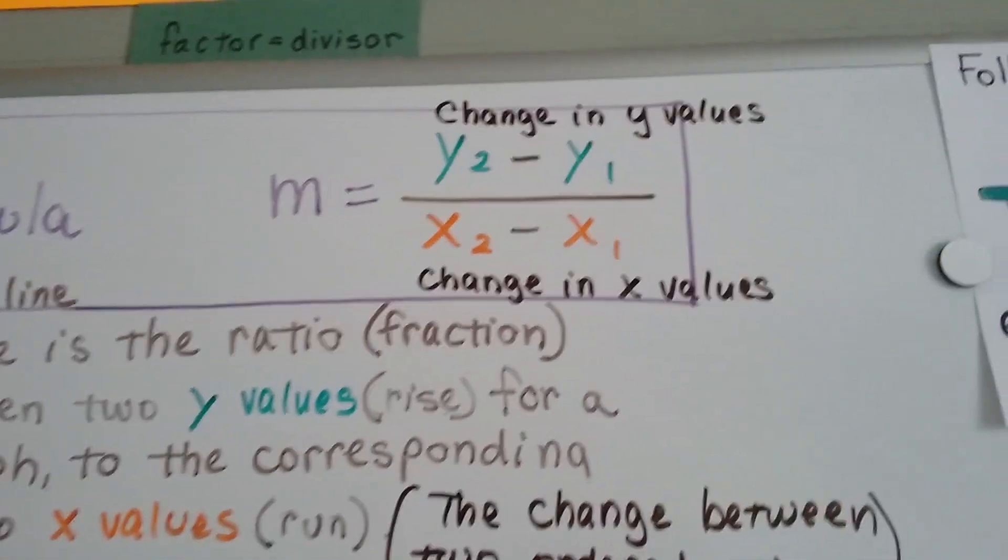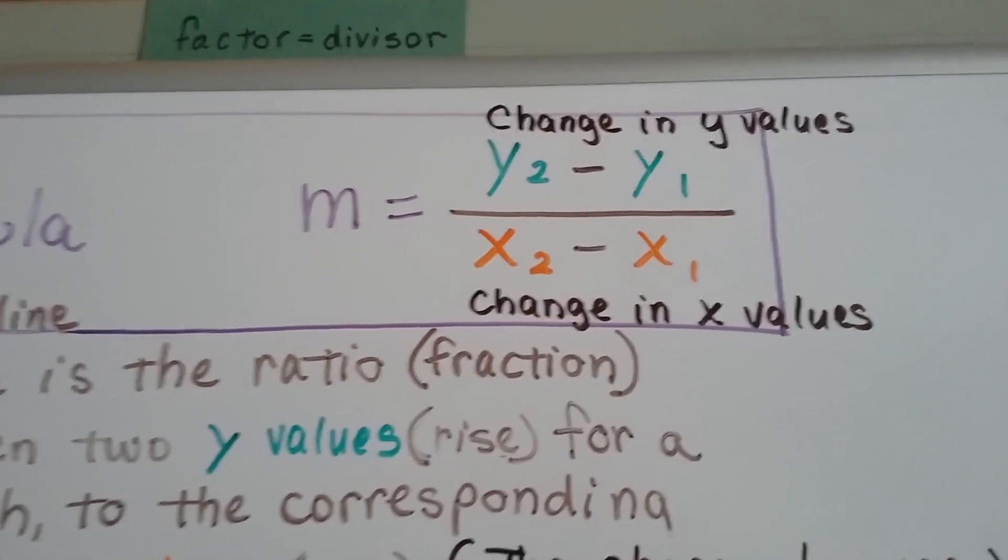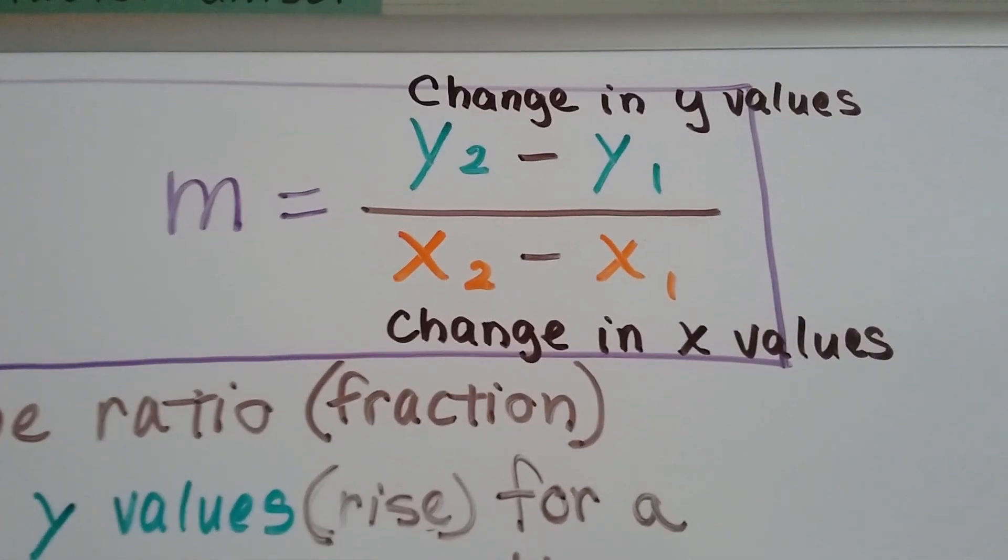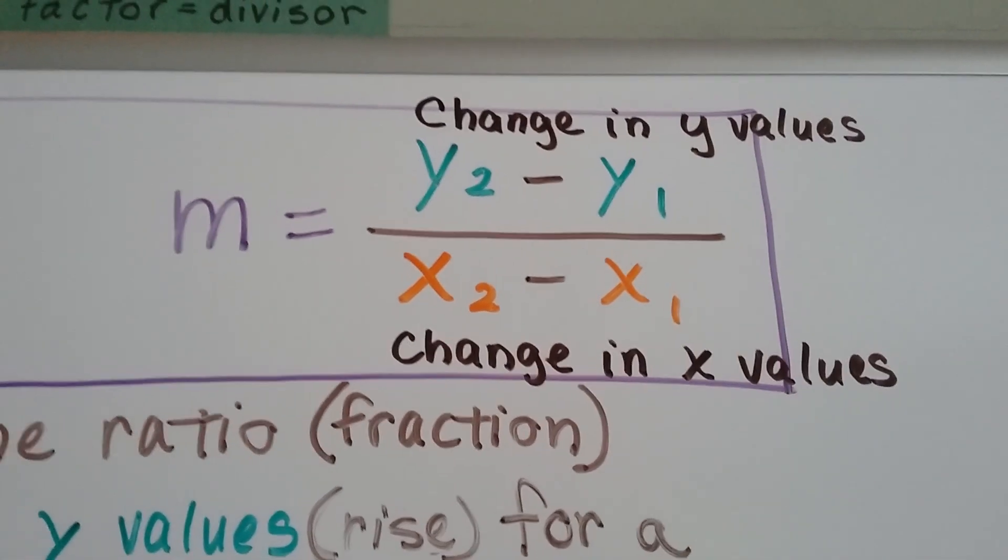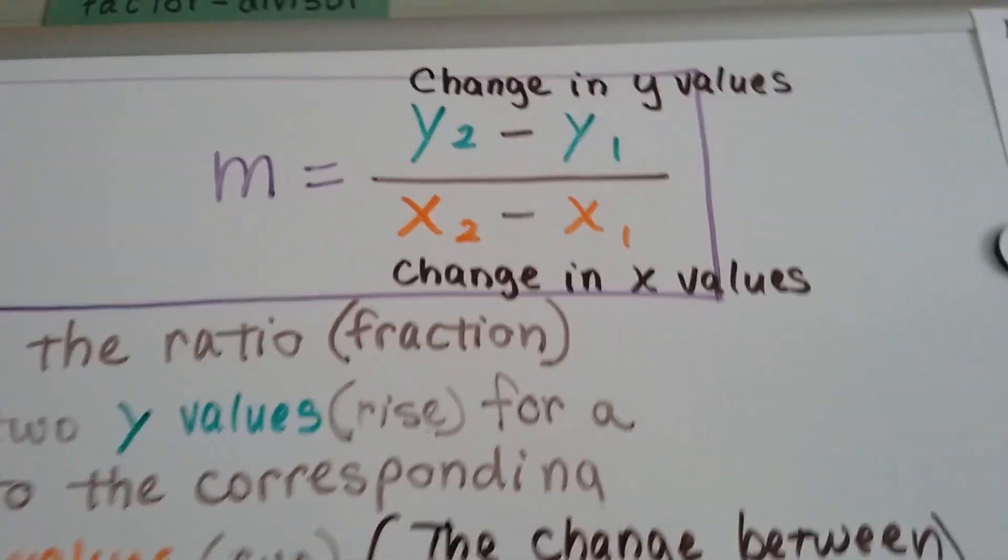So as we discussed before, the slope formula is m is the slope of the line. It's the change in y values over the change in x values for two ordered pairs.